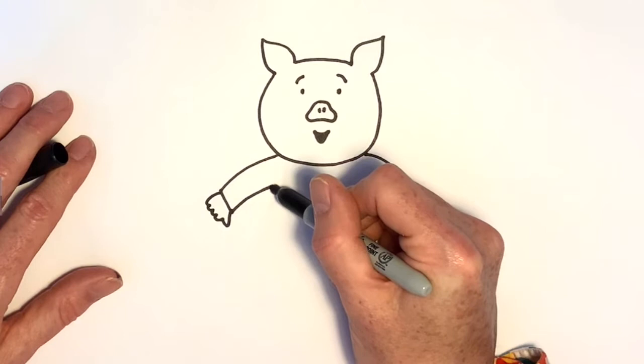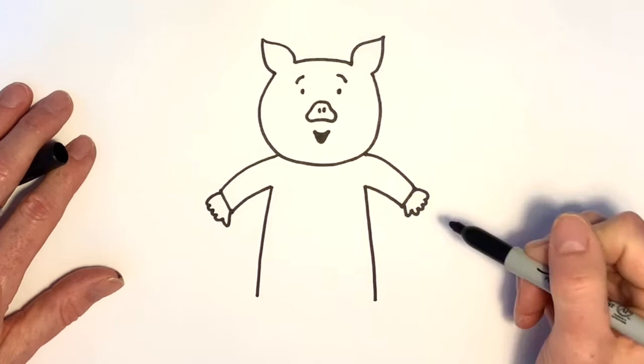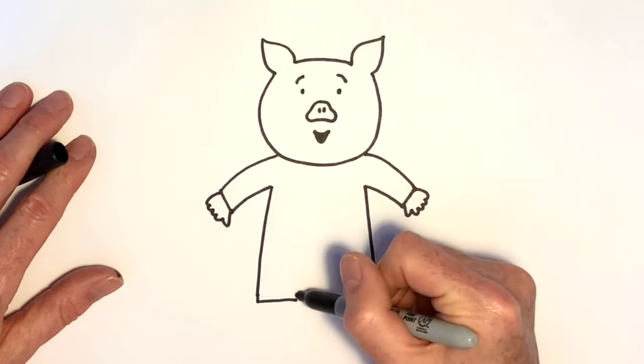Now, the next thing is we're going to draw a line down here and a line down here for the sides of the pig's body. And then we're going to draw the pig's legs, like that.